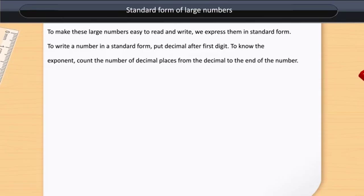To write a number in standard form, put the decimal after the first digit. To know the exponent, count the number of decimal places from the decimal to the end of the number.